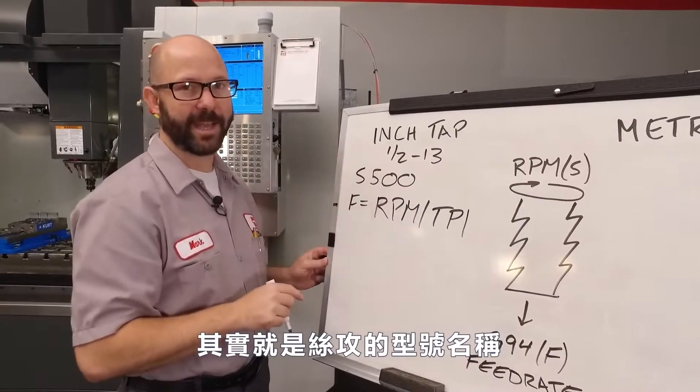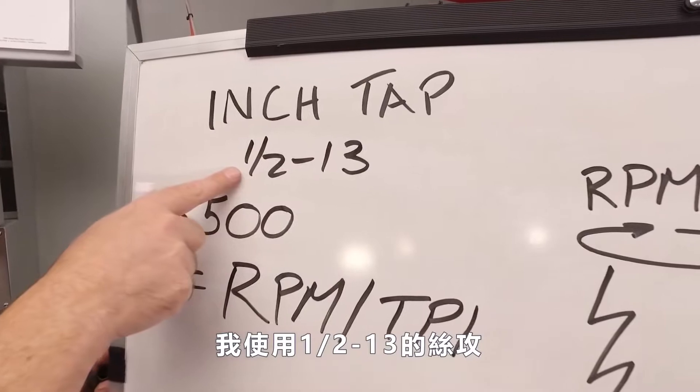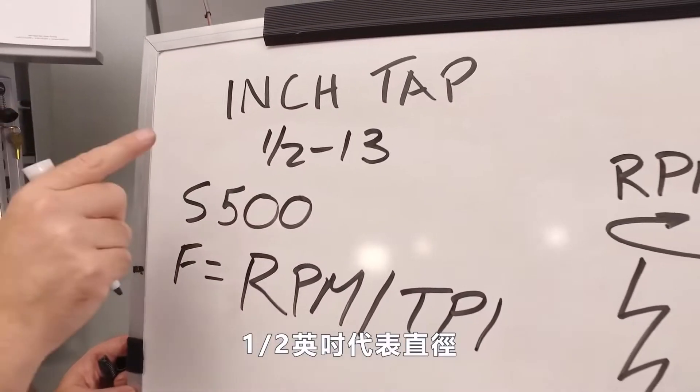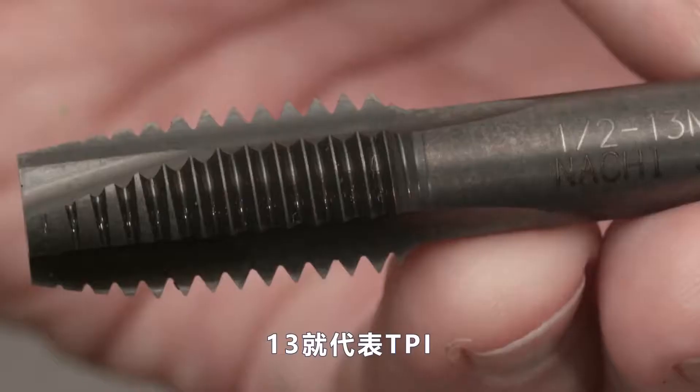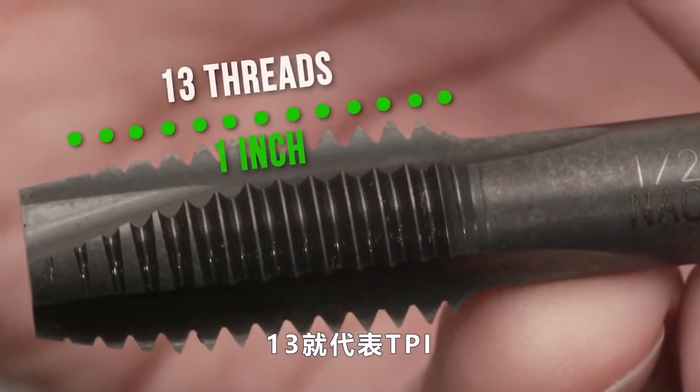It's right in the name of our tap. We're using a half 13 tap. One half inch is the basic diameter and 13 is our TPI.